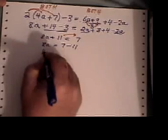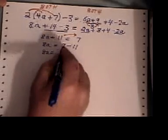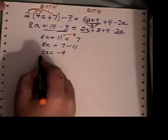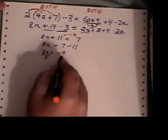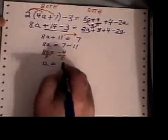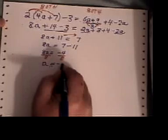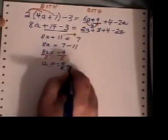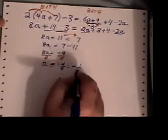Now we can simplify again. 7 minus 11 is negative 4 and now we're ready for our divide sign. The opposite of multiplying by 8 is divide by 8. So, I divide both sides by 8 and out pops the answer. a is equal to negative 4 over 8 which simplifies to negative 1 over 2.